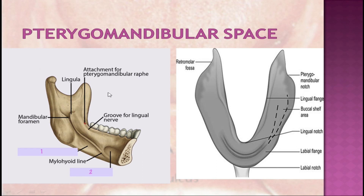The pterygomandibular space is a small fascial-lined cleft containing mostly loose areolar tissue. It is a potential space in the head, paired on each side, located between the medial pterygoid muscle and the medial surface of the ramus of the mandible. The pterygomandibular space contains the inferior alveolar nerve, artery and vein, lingual nerve, and nerve to mylohyoid. The sphenomandibular ligament and fascia are also present. Any compression of this area would result in discomfort of the patient, so a thorough knowledge of the denture-bearing areas is necessary for proper fabrication of complete dentures and for impression making.